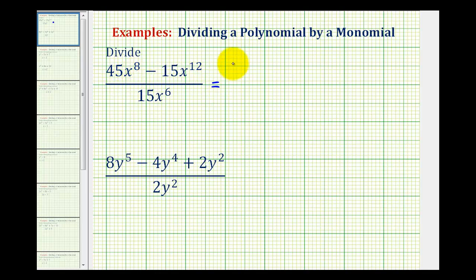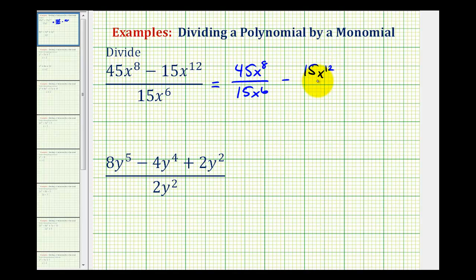So we'll first have 45x to the eighth divided by 15x to the sixth, minus 15x to the twelfth divided by 15x to the sixth. Notice how each term in the polynomial has been divided by the monomial.